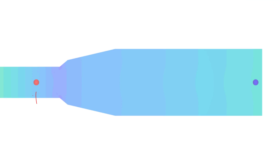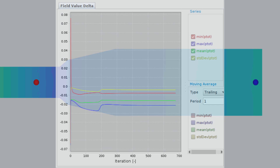Still regarding monitoring functions, we added support to calculate statistics of a given field between a pair of existing functions. With this new feature, users can now monitor, for example, the pressure drop between two probe locations by selecting the difference operator.